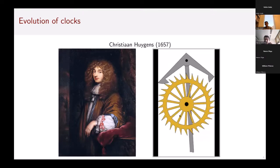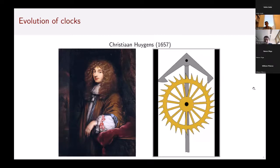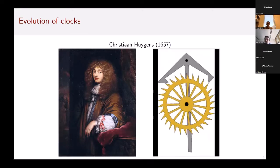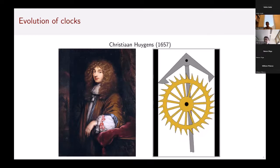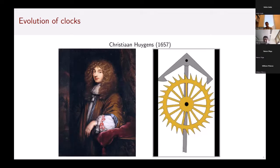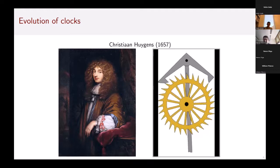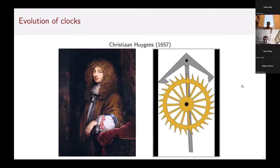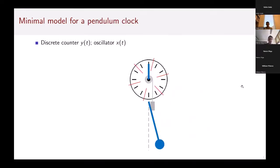That is exactly what is needed because now we could in principle apply the TUR to the rotations of this cog here. My idea was to find a simple thermodynamically consistent model for such a system. Obviously this would be very hard to model all these moving degrees of freedom, so I was trying to come up with a minimal model that just has a discrete counter observable y and a continuous oscillator observable x.